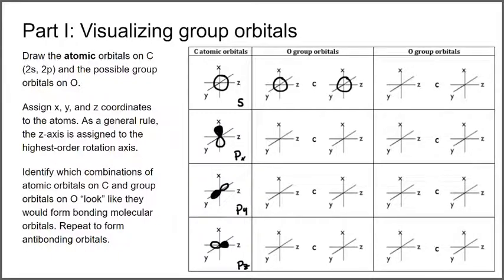We could also have a group of oxygen orbitals where one is unshaded and one is shaded, showing opposite signs of the wave function. You might wonder about both being shaded — but that's essentially equivalent to both being unshaded. The key point is there's one combination where they're the same and one where they're different, analogous to the plus and minus linear combinations.